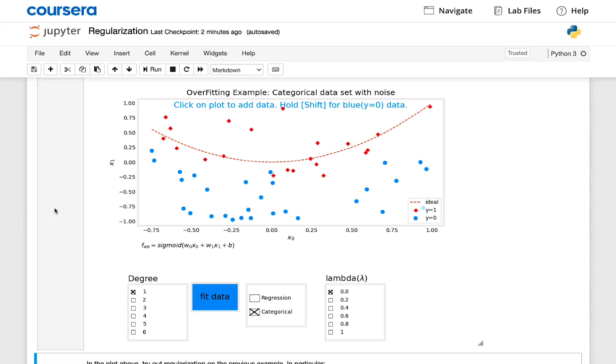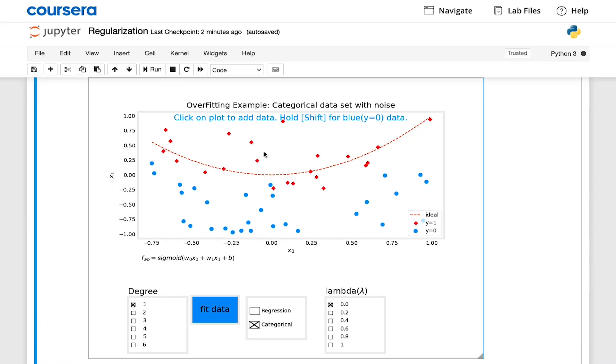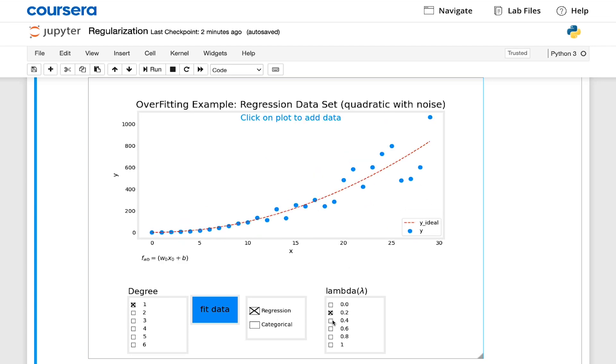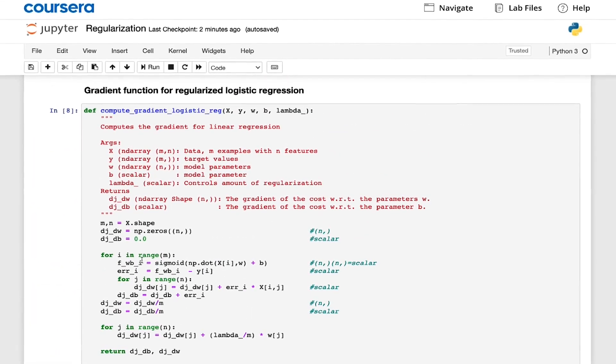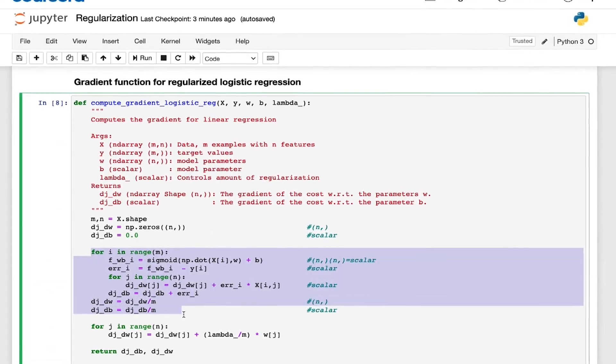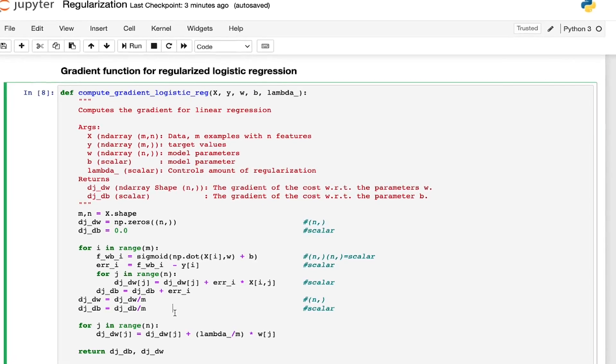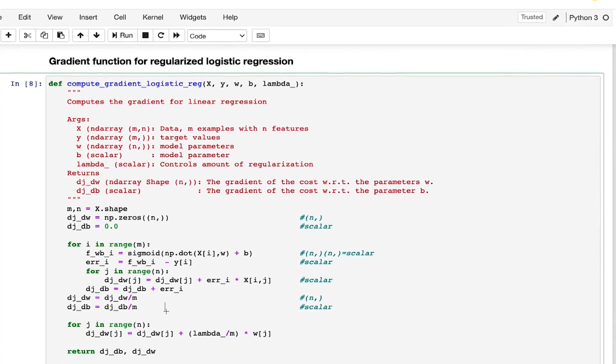In the final optional lab of this week, you'll revisit overfitting. In the interactive plot in the optional lab, you can choose to regularize your models, both regression and classification, by enabling regularization during gradient descent and selecting a value for lambda. Please take a look at the code for implementing regularized logistic regression in particular, because you'll implement this in a practice lab yourself at the end of this week.